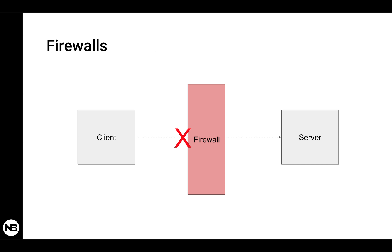Sometimes between a client and a server there is a firewall — either a network firewall or a host firewall on the server itself. If a firewall is dropping or rejecting connections to certain TCP/IP ports, the client won't be able to connect. This is a big problem if you have a legitimate application that needs to pass through the firewall, especially without direct control over the network where the firewall and server are installed.